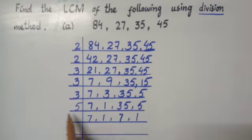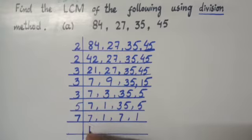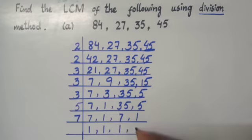Now, 6 se solve nahi ho sakta. 5 ke baad, 6 prime number nahi hai. So, I have to solve with 7. 7 1s are 7, giving us 1. 7 1s are 7, giving us 1. Last me, jab tak 1 a jaata hai, uske baad hum solution end ker day te hai. This 1 ko ab hum further divide nahi kar sakta.